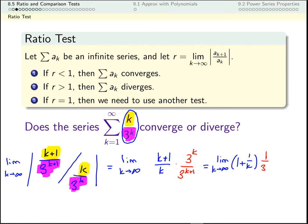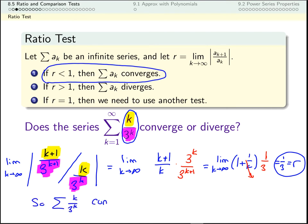So this is the limit as k goes to infinity of 1 plus 1 over k times a third. As k goes to infinity, this 1 over k goes to 0, so my limit is a third. And this is what I'm calling r. Now in my test, r is a third. It's less than 1. That means the series converges. It converges by the ratio test because r is a third and a third is less than 1.